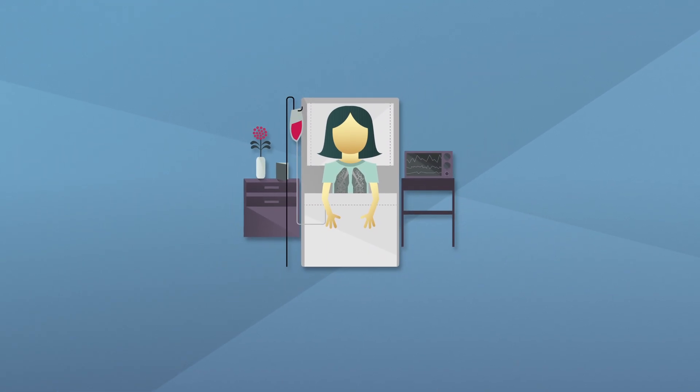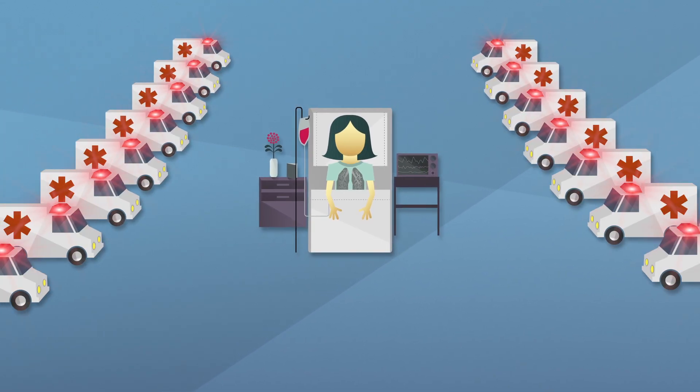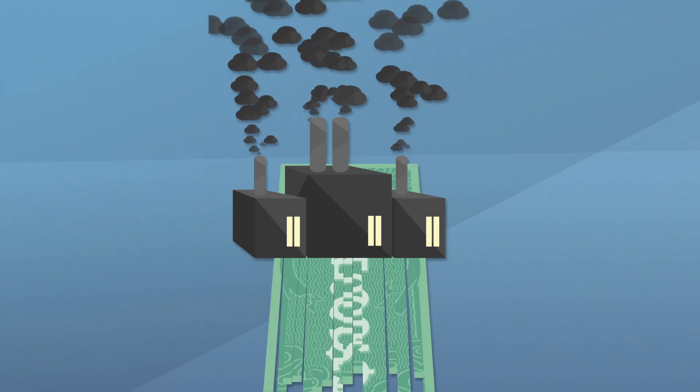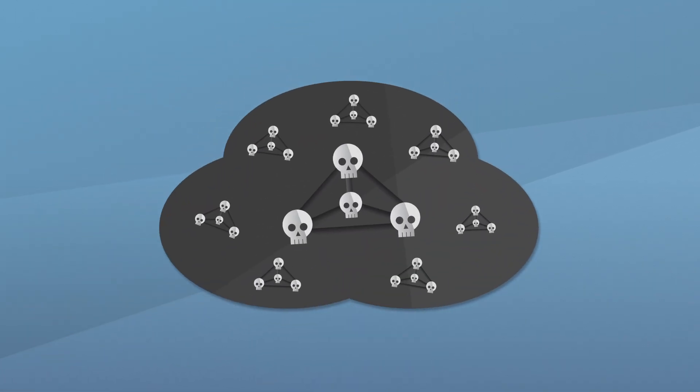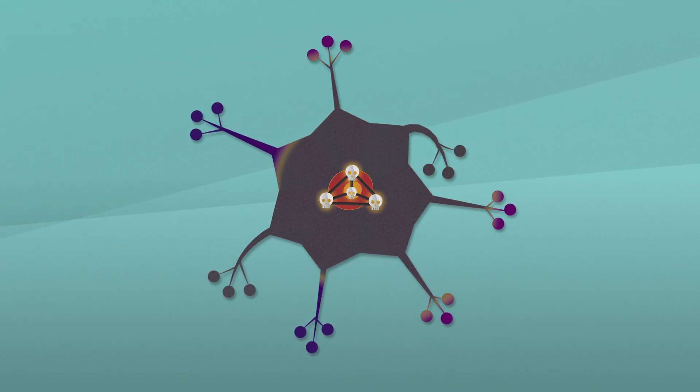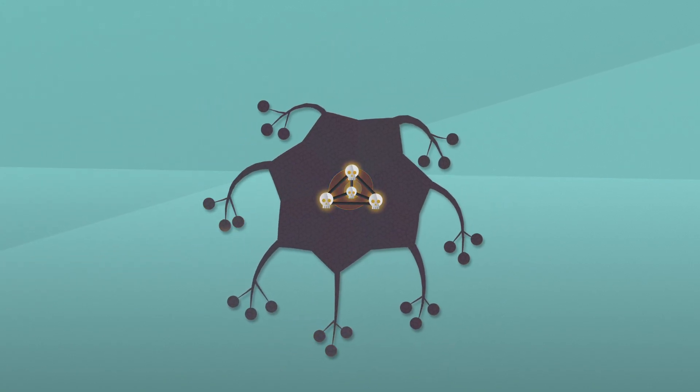The pollution from burning coal leads to 12,000 emergency room visits and more than $100 billion in health costs every year. Coal pollution also contains toxic mercury that damages the nervous system and is especially dangerous for babies and young children because it can cause developmental problems.